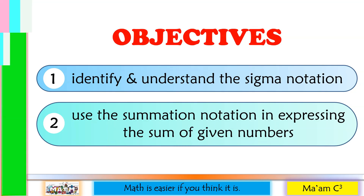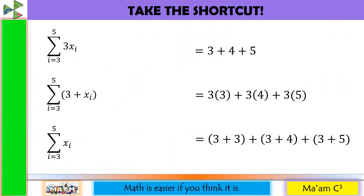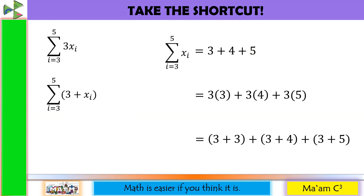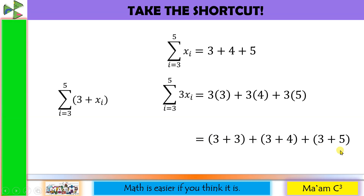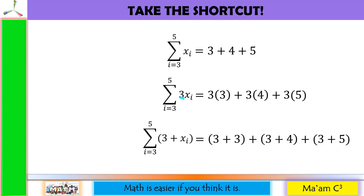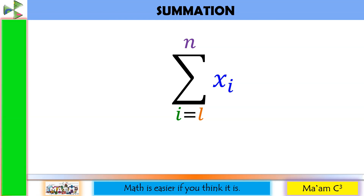Let's have an activity: Take the Shortcut. Do you know that we can express this in a shorter way? For example, 3 plus 4 plus 5 is also equal to 3 times 3 plus 3 times 4 plus 3 times 5, and quantity 3 plus 3 plus quantity 3 plus 4 plus quantity 3 plus 5. This is what we call summation.